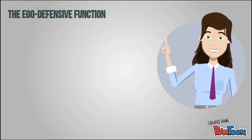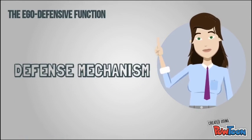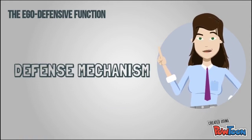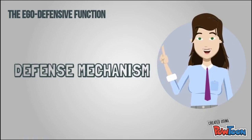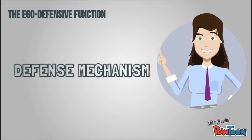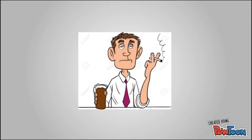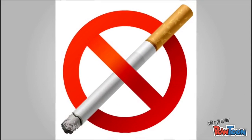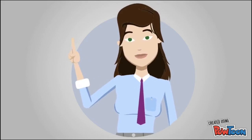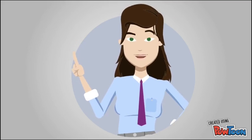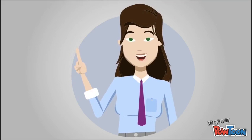Finally, the ego-defensive function of attitudes works as a defense mechanism for consumers. This function enables a consumer to protect himself or herself from information that may be threatening. For example, people who like to smoke may discount any evidence that smoking is bad for their health. In this case, the attitude works as a defense mechanism that protects the individual from the reality that smoking isn't healthy.